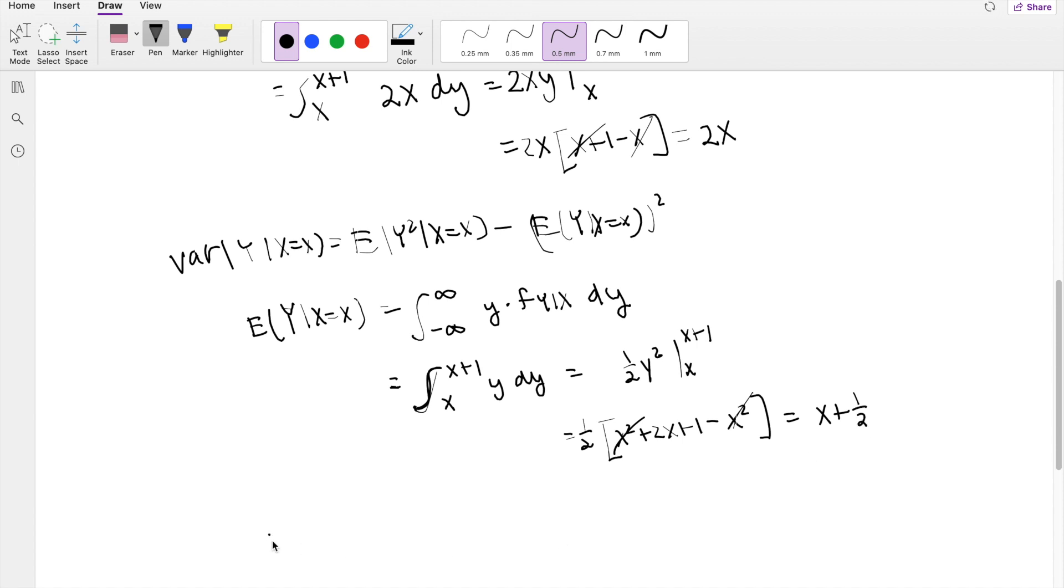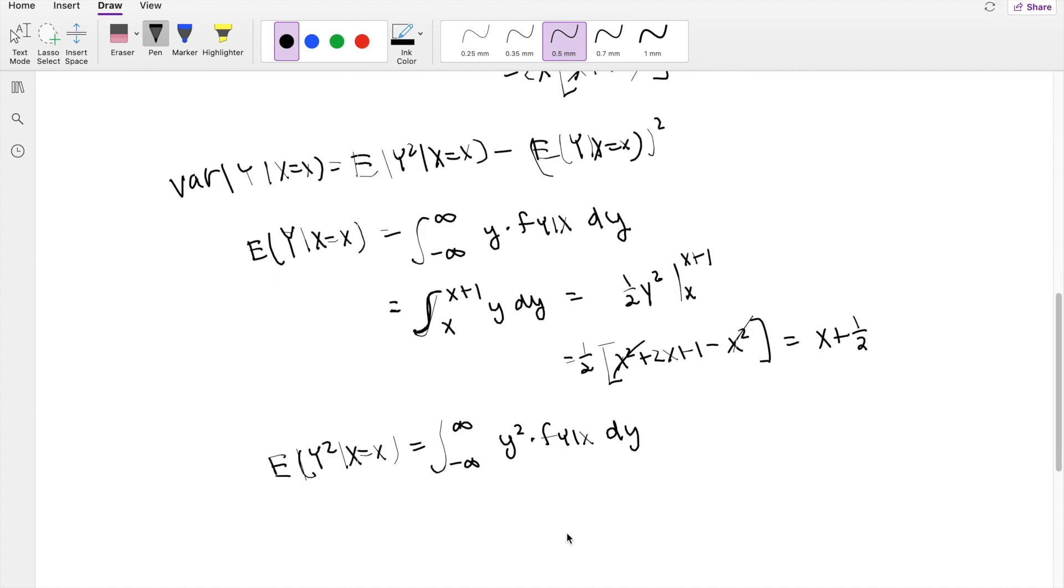All right, moving on, we need to find the second moment here, Y² given X equals x. Again, by definition, that's going from negative infinity to infinity of Y² times f(Y | X) dy. So then this is equal to Y³ over 3, integrating from X to X plus 1, because the range is still the same for Y.